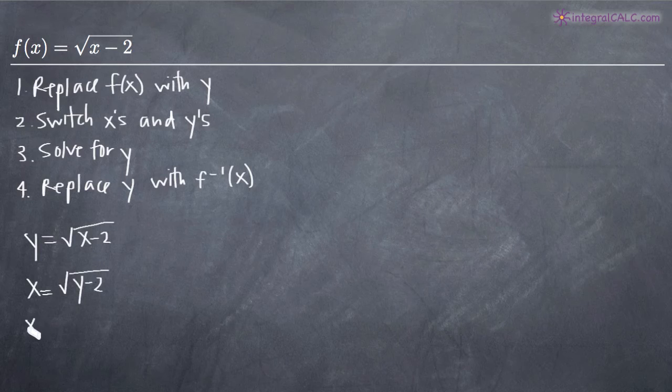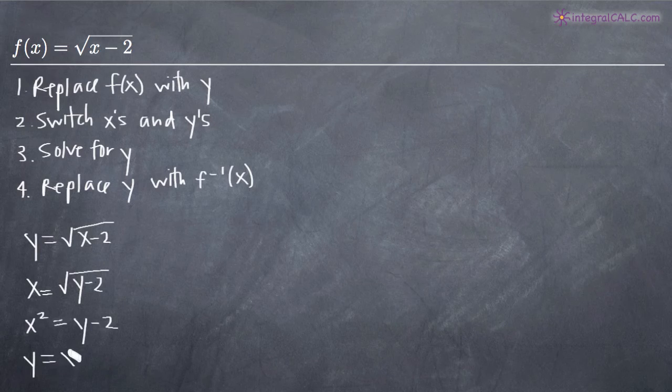We're going to square both sides. So we'll get x² equals, when we square the right hand side, we end up with just y - 2 because we're taking the square of a square root. So we'll end up with y - 2. Then we'll add 2 to both sides and we'll get y = x² + 2.